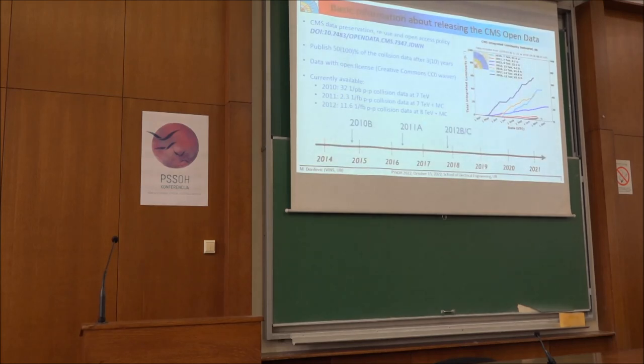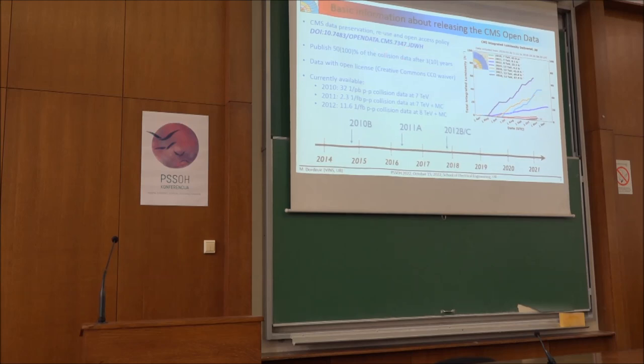Now this is some basic information about the data itself. There is a special policy that CMS has issued, I think in 2018, on the preservation of this data, on the re-usage of this data and on the open access of this. And then CMS collaboration has obliged to publish more than 50% of its data that has been collected after three years and 100% of its data after 10 years.